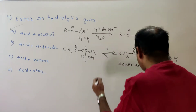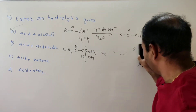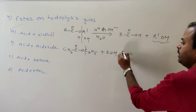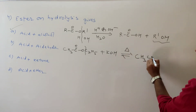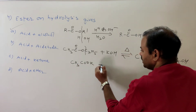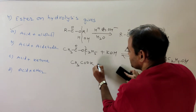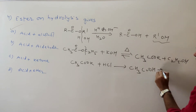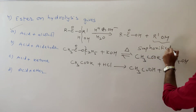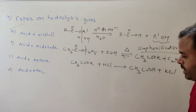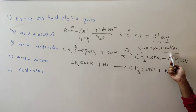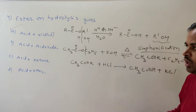Also, in presence of KOH on heating, CH3COOC2H5 gives CH3COOK plus C2H5OH. This CH3COOK on treatment with HCl gives CH3COOH. This process is known as saponification — hydrolysis of ester in presence of alkali. Hydrolysis of ester in presence of alkali (KOH) is known as saponification. This is ester hydrolysis under basic conditions.